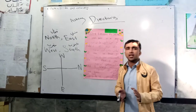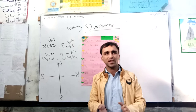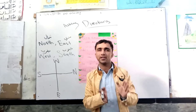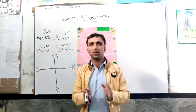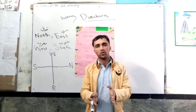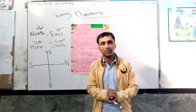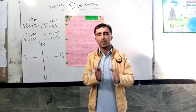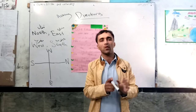On a compass there are four directions: North, East, South, and West. These change when you change your place. The compass will show a different direction at different places, but the main directions will always be there.